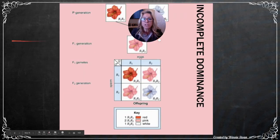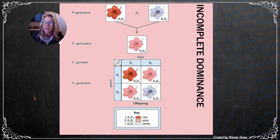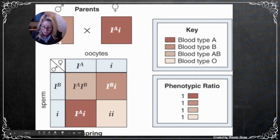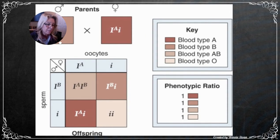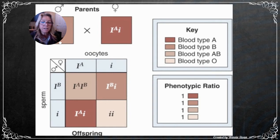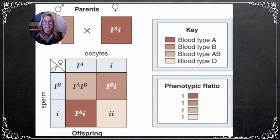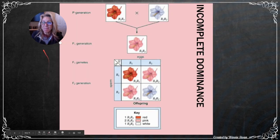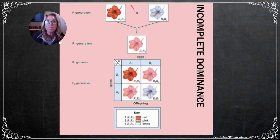Notes on multiple allele traits: defined as when a gene has many allelic forms or alternative expressions instead of just two. Instead of just big T and little t, we have I^A, I^B, and little i. Codominance is when both dominant allele possibilities are expressed — as seen in type AB blood.